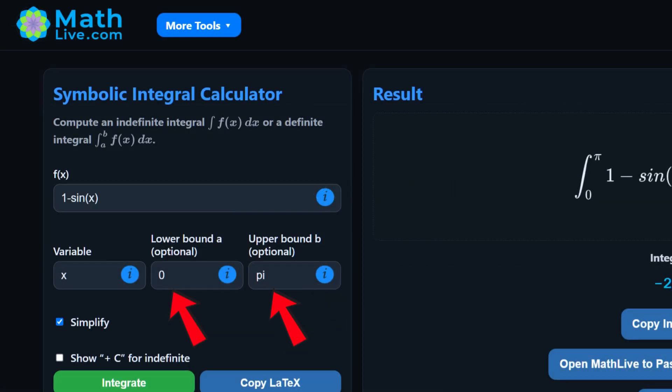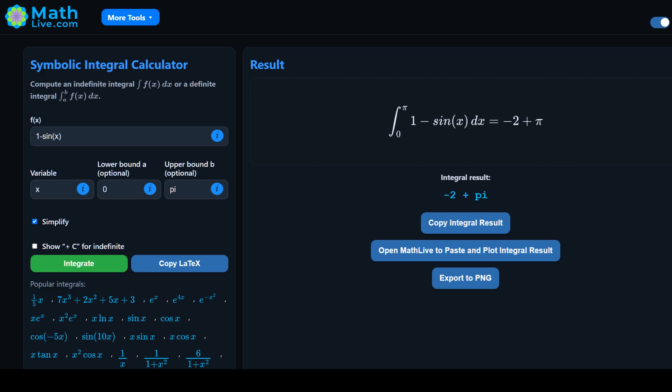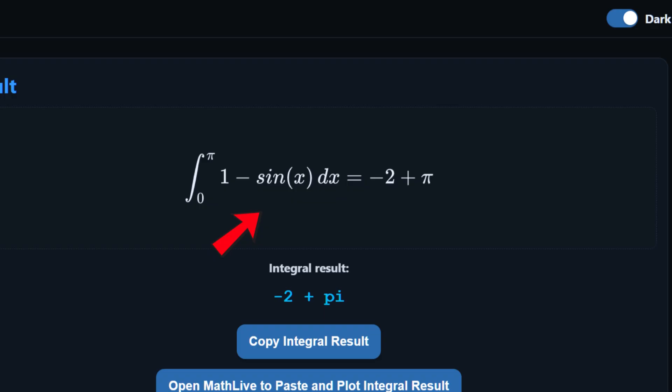Let's now make it a definite integral from zero to pi and evaluate it. We get negative two plus pi, or simply pi minus two, which confirms our hand calculations as well.